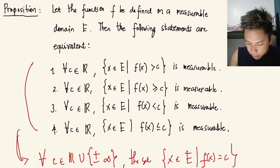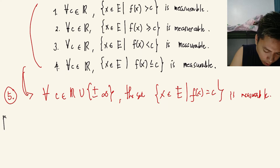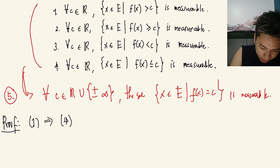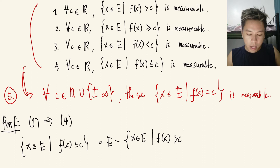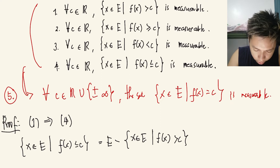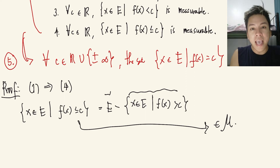We will label that as statement 5. To show this proposition is true, let's prove 1 implies 4. Observe that the set of x in e such that f(x) ≤ c is the same as e minus the set of x in e such that f(x) > c. We assume statement 1 to be measurable, and since e is also measurable, this tells us that statement 4 is measurable — meaning 1 implies 4. And similarly, 4 implies 1.